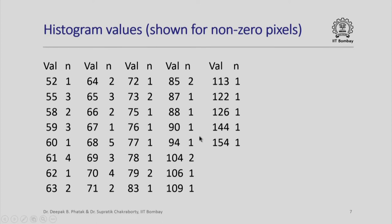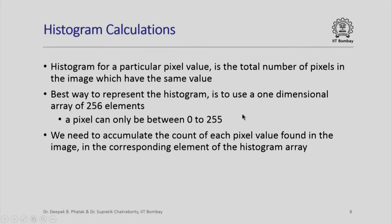This is nothing but the count of how many times a particular pixel value occurs in the image. Now, in order to perform histogram calculations, what we need to do is find out how many pixels exist in the image which have the same value. The best way to represent such a count is to accumulate this count in various array elements of a single array. Since there are possibly 256 values, the best way to represent the histogram is to use a one-dimensional array of 256 elements, because a pixel can only be between 0 to 255 for a greyscale or black and white image. All that we need to do is accumulate the count of each pixel value found in the image in the corresponding element of this histogram array.